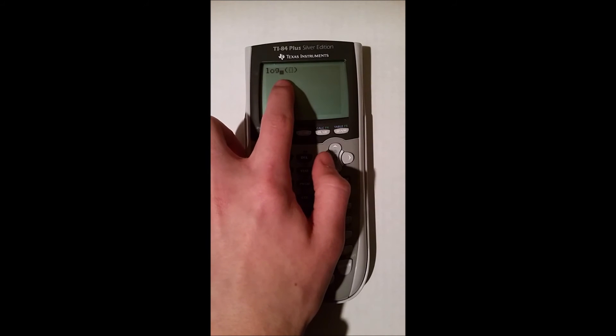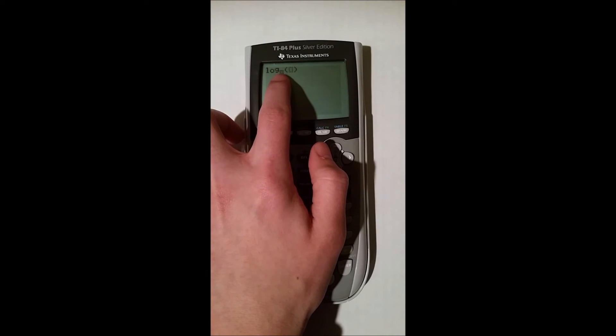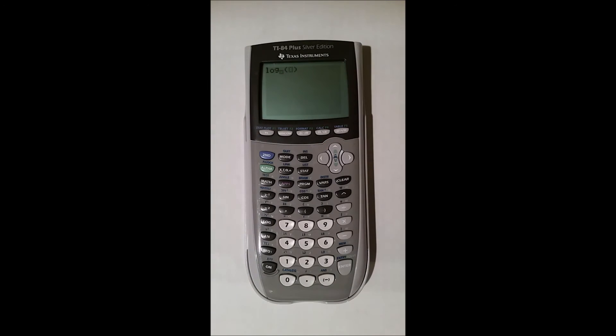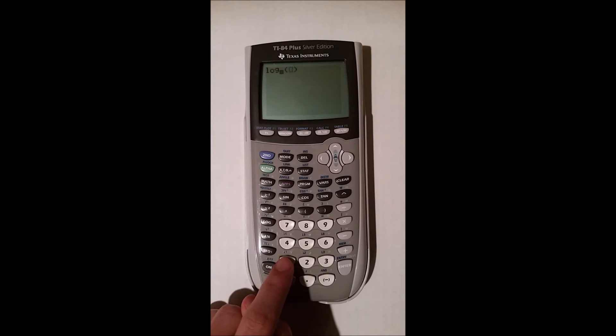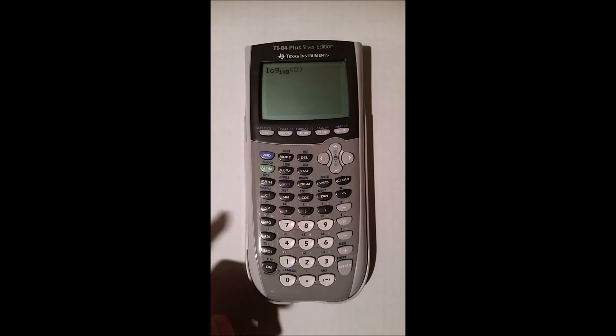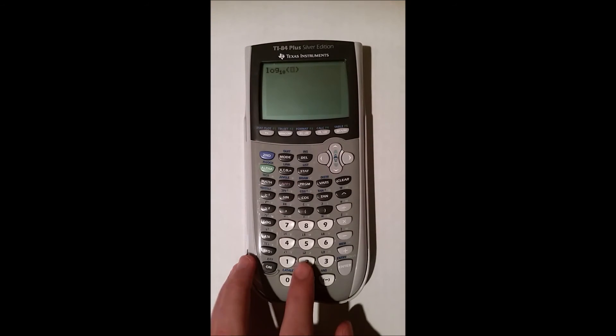And now you can see it actually has the highlighter right below the G in log, which signifies you can put in whatever you want for a base. So log base, say let's do base 10 of 2 is that.